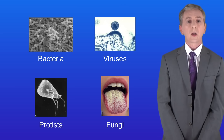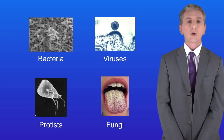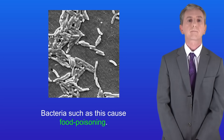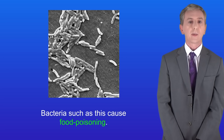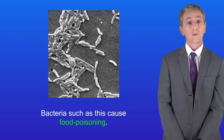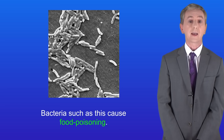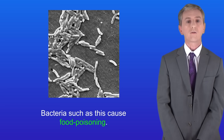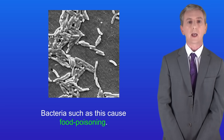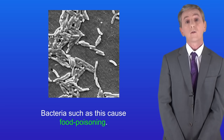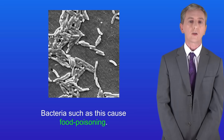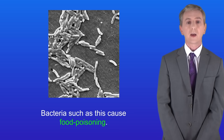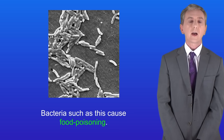We're going to start by looking at bacteria. Here is a picture of bacteria under the microscope — these are a type of bacteria which cause food poisoning. Around 300,000 people in the UK get food poisoning from this type of bacteria every year. Fortunately most people recover, but sometimes it can be fatal. In fact, many bacterial diseases can kill us.